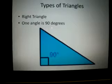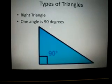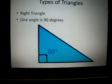A right triangle contains one angle that is equal to 90 degrees. This is indicated by the square located in the bottom left angle of the triangle.